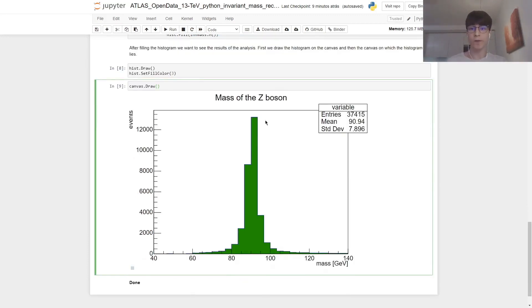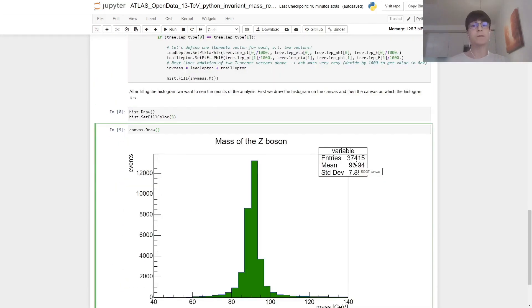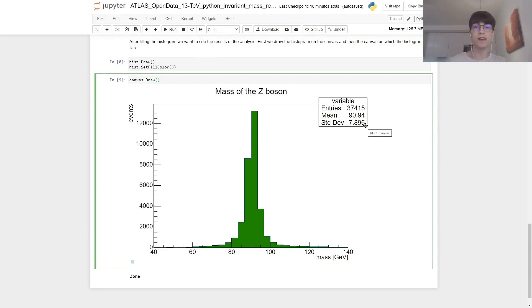The result is a histogram with the title 'Mass of the Z Boson', an x-axis stating the mass in giga-electron volts going from 40 to 140, and on the y-axis the amount of events in each of the bins. We can also see some statistical information about our data. So we have 37,415 entries, which is a smaller value than our previous 53,653, which means that we are actually filtering through the data, and it also gives us a mean value of the mass of the Z boson as roughly 91 giga-electron volts, and also the standard deviation as roughly 7.9.